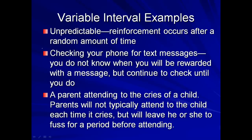Variable interval reinforcement occurs after a random or unpredictable amount of time. A great example is checking your phone for text messages — you don't know when you're going to be rewarded with a message, but you keep checking. Sometimes you check and you get one 10 seconds later; other times you check five times in 10 minutes and still have nothing. The time is what changes, but you still keep checking.